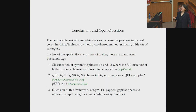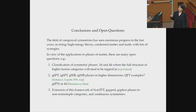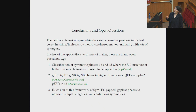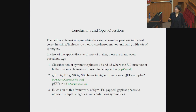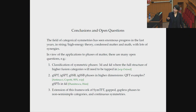Conclusions and open questions: I focused mostly on two-dimensional phases with fusion category symmetry. There are many interesting open questions to extend this to higher fusion categories, particularly to 3D and 4D. In 3D, it would be interesting to connect to the classification of 3D topological order. Also, what is the physical meaning of higher-dimensional GSPT and IGSPT phases? There are examples of GSPTs in four dimensions studied by Dumitrescu and Sin. It would also be interesting to extend this to non-semi-simple categories, continuous symmetries, and finitely many symmetry generators.